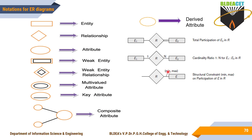For 1:N, the min value is 1 and the max value is N. If the min value is 0, it means partial participation — that entity may be involved or may not. If the min value is 1, it indicates total participation. These are the notations used while drawing or designing ER diagrams.